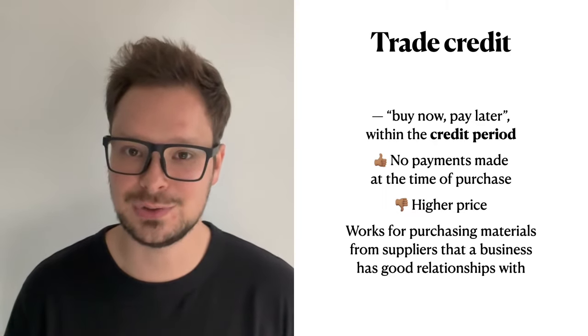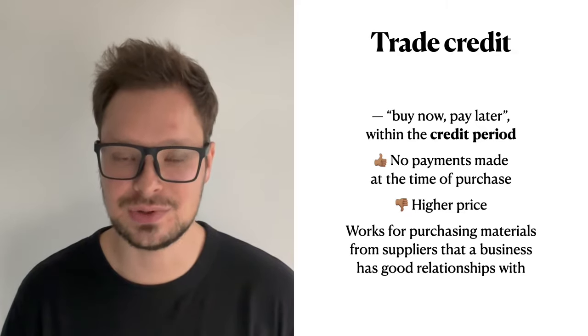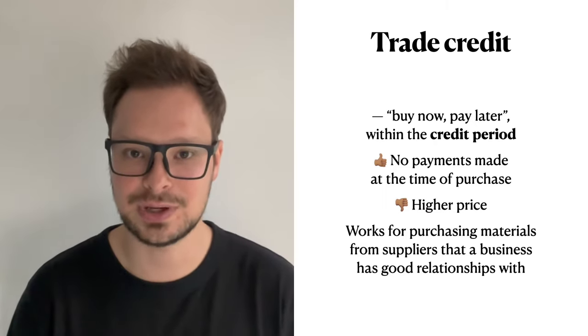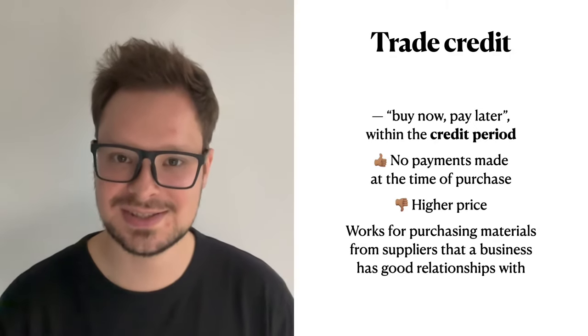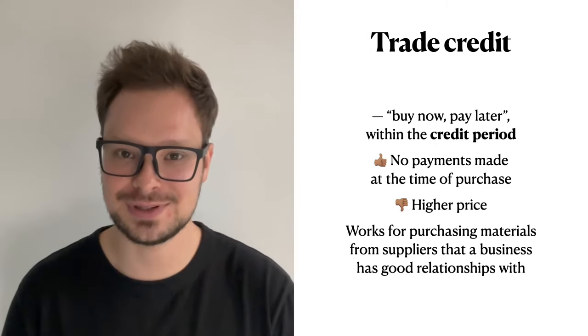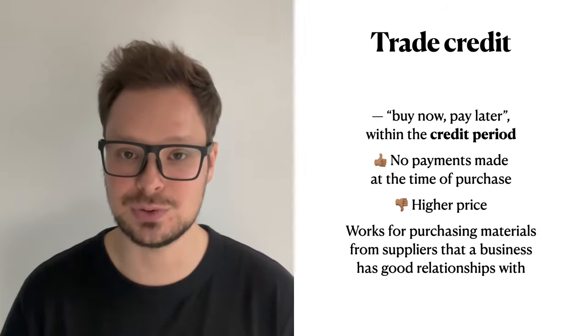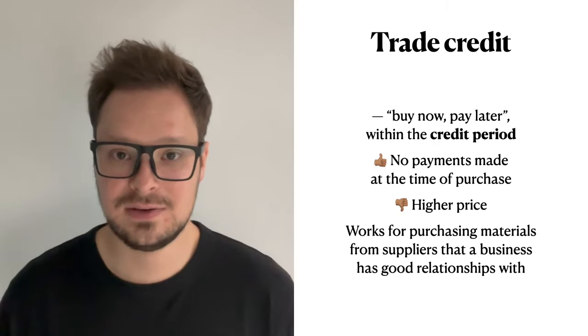Trade credit works on a buy-now-pay-later basis. It's a relationship between a creditor — your supplier who gives you raw materials or components — and a debtor, which is you, the person who buys from the supplier and promises to pay later within the credit period. The credit period is the time within which you're supposed to pay back your supplier. For instance, continuing the chair manufacturing example, you can get wood from your supplier today but pay back in one month.